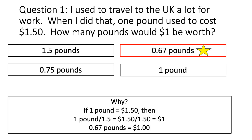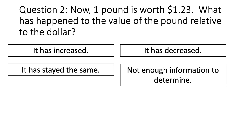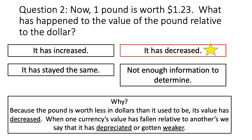To see why, note that to change $1.50 to $1, we need to divide by 1.5. Since we have to do the same thing to both sides of the equation to maintain equality, we also divide one pound by 1.5, which tells us that one dollar is worth about .67 of a pound. Now, one pound is worth $1.23. What has happened to the value of the pound relative to the dollar? The answer is that the value of the pound has decreased relative to the value of the dollar, because the pound is worth less in dollars than it used to be. When one currency's value has fallen relative to another's, we say that it has depreciated or gotten weaker.